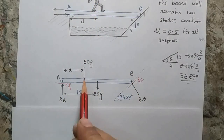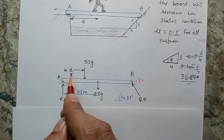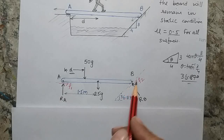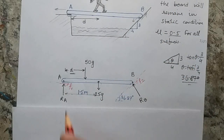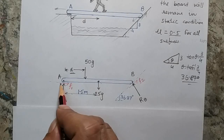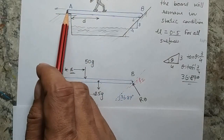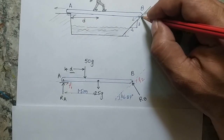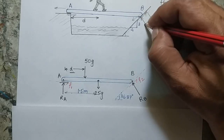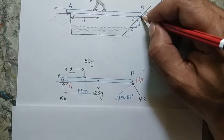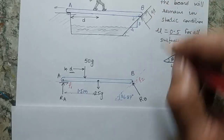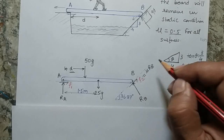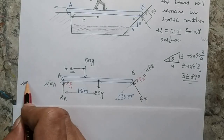The weight of the person is 50g and I assume the person can move up to a distance d. The weight of the board is 25g, acting at the midpoint, which is 1.5 meters from point A. At point A there is a reaction Ra acting upward and frictional force F1 acting to the right. At point B, resting on the inclined surface, the reaction Rb is normal to the surface at 90 degrees. The friction F2 equals μRb and F1 equals μRa, where μ = 0.5.